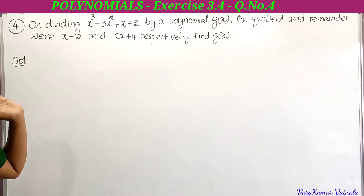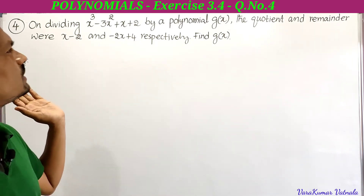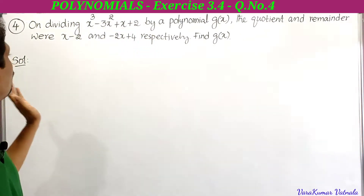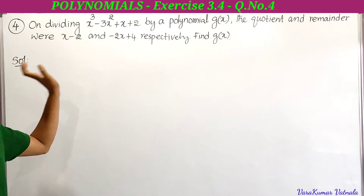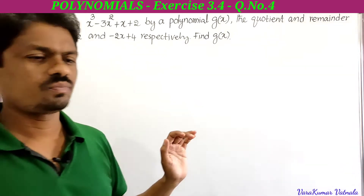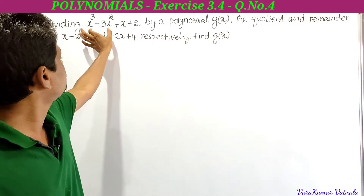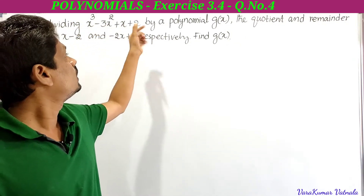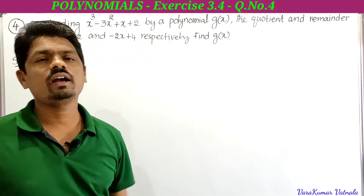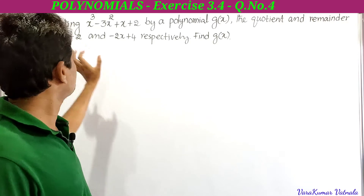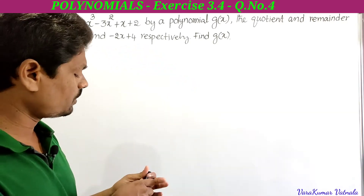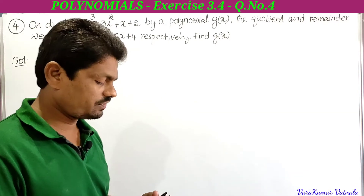On dividing x³ - 3x² + x + 2 by a polynomial g(x), the quotient and remainder were x - 2 and -2x + 4 respectively. We need to find g(x). So if x³ - 3x² + x + 2 is divided by g(x), we get quotient x - 2 and remainder -2x + 4.